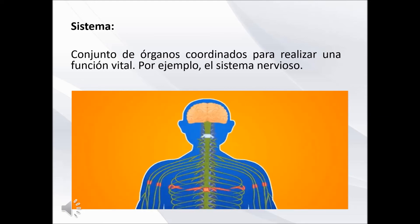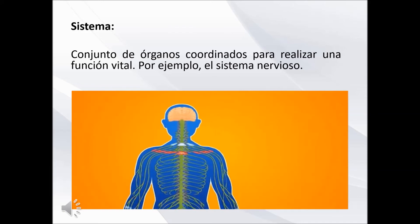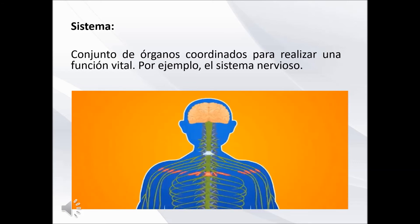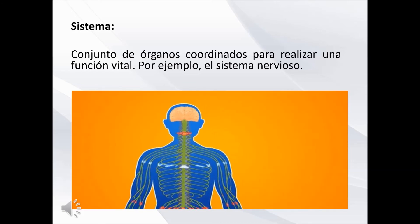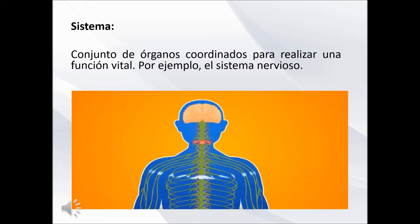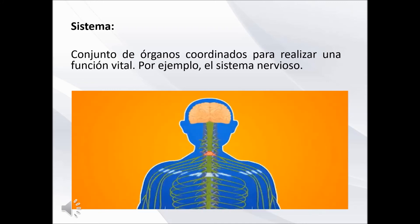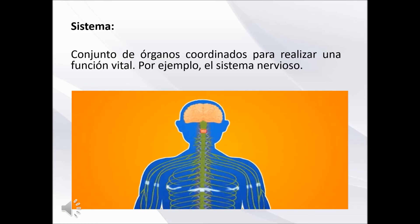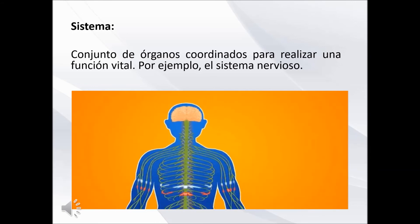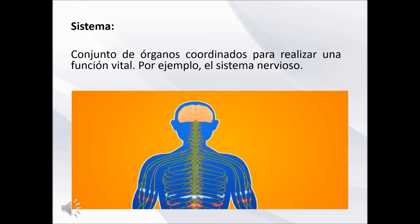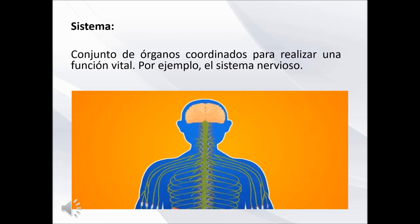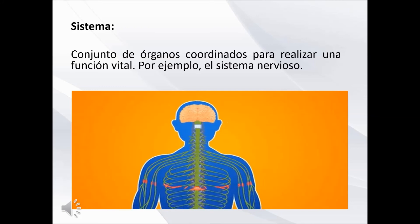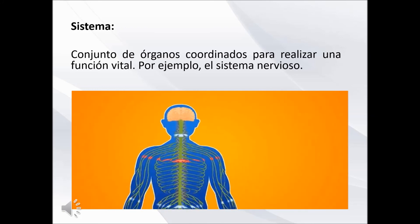Por otra parte, tenemos la función de relación. En esta participan los órganos de los sentidos, que recogen información del exterior. El sistema nervioso la recibe de los órganos de los sentidos, la procesa y elabora respuestas, y el sistema locomotor, entre otros, lleva a cabo las respuestas. Y finalmente, la función de reproducción: los órganos reproductores masculinos y femeninos producen células especializadas que al unirse dan origen a un nuevo individuo y aseguran las características y el aumento del número de individuos de las especies.